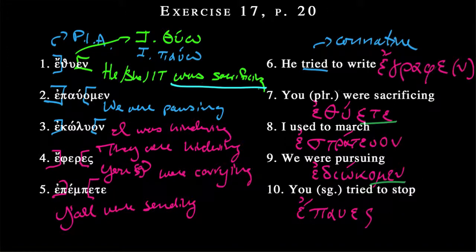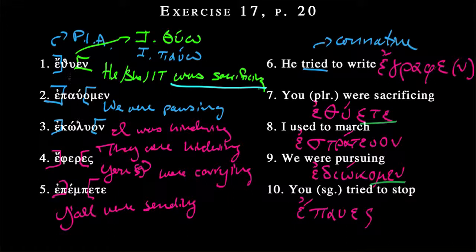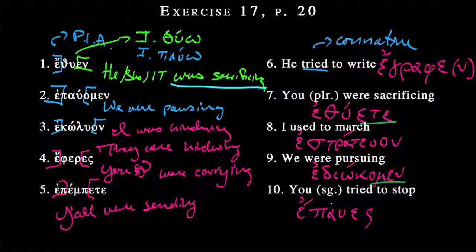Hopefully that was helpful. There will be an answer key on Canvas anyway. But here's a good way to break everything down — you can see there's really an algorithm to this. We use epsilon at the beginning to signal the past indicative. We use the personal endings that show it is imperfect. Otherwise, we're just using the stem from the first principal part. So if you know your dictionary entries — GRAFO, THUO, STRATEUO, DIOKO, PAUO — you should be able to do this without much hassle. It's really just combining the pieces. That's how Greek works. We'll see more of this in the future.